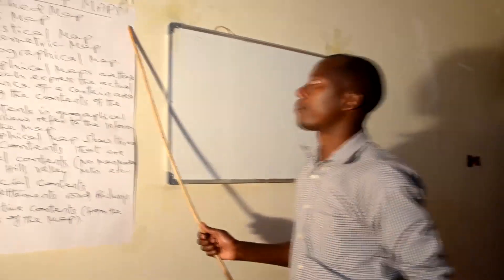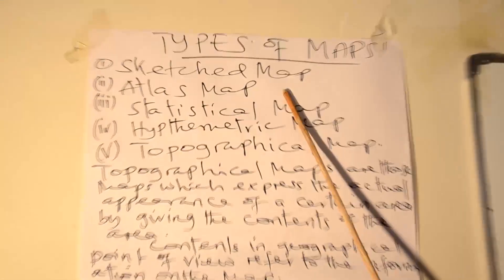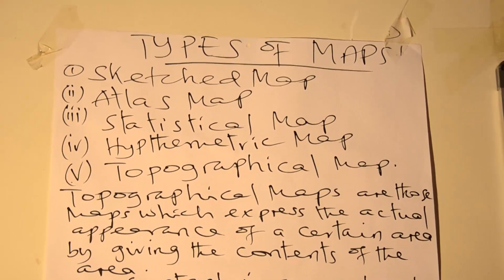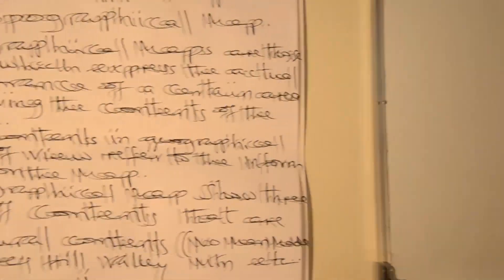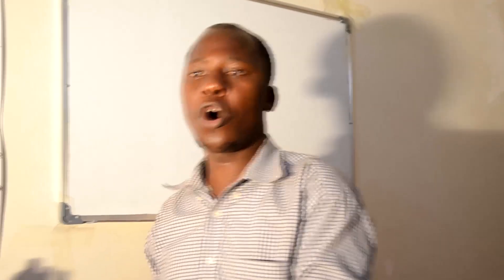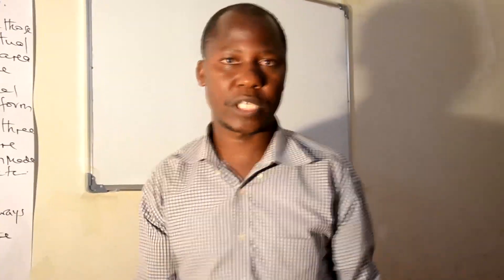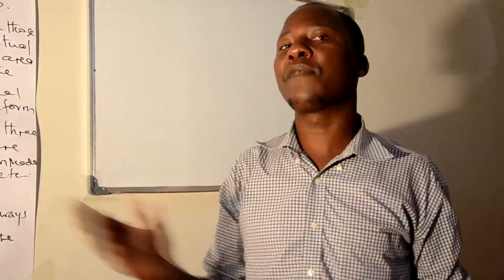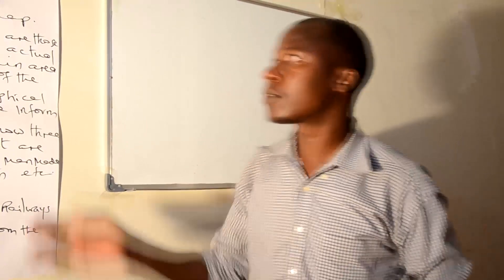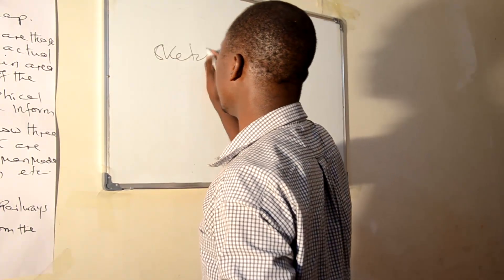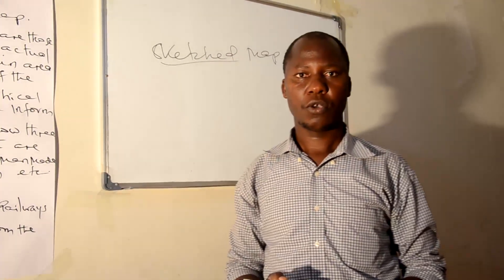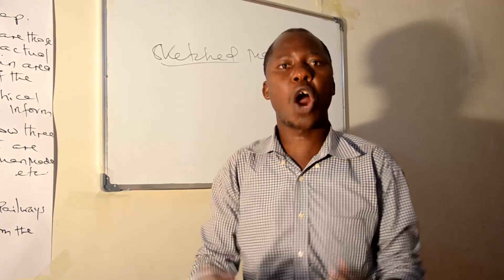The first type is called the sketch map. A sketch map is the kind of map which is drawn roughly — that is, it is a rough drawing of a certain area or map.